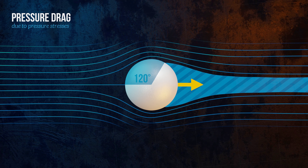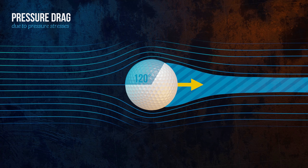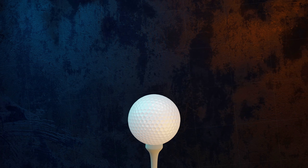This is why golf balls have dimples instead of being perfectly smooth. The dimples generate turbulence, which delays flow separation, reduces drag, and allows the ball to travel further.